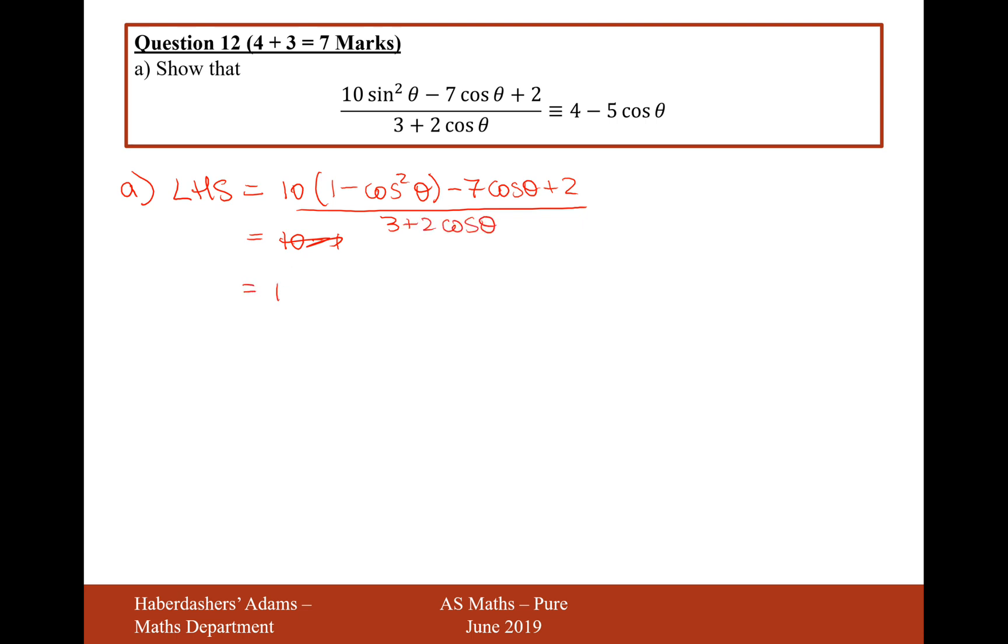So now this is going to equal 10 minus 10 cos squared theta minus 7 cos theta plus 2, again over 3 plus 2 cos theta. Let's now simplify everything together. So it's going to be minus 10 cos squared theta minus 7 cos theta plus 12 over 3 plus 2 cos theta.